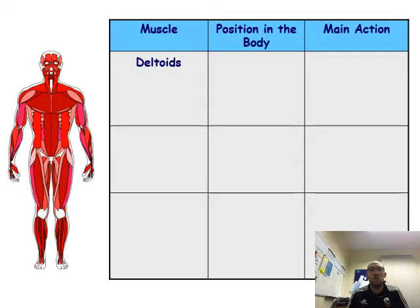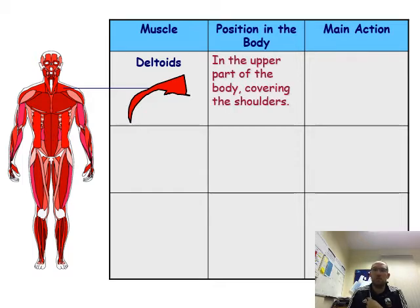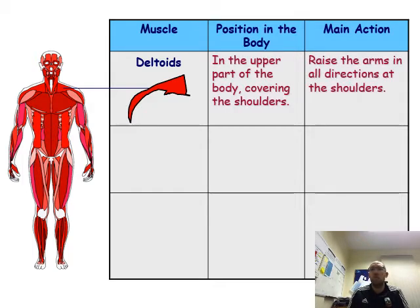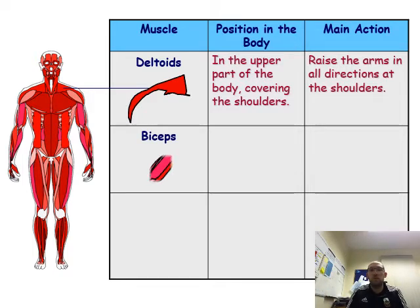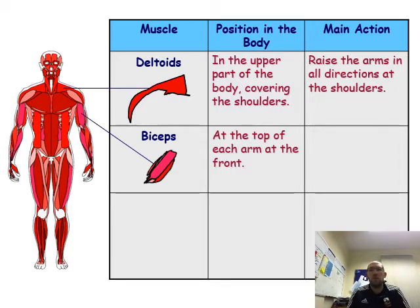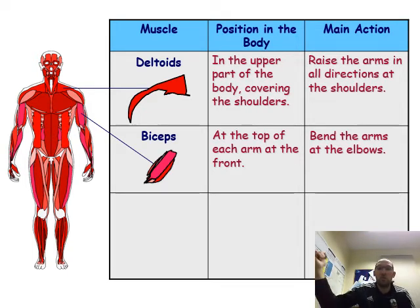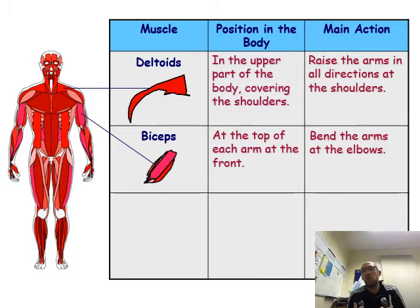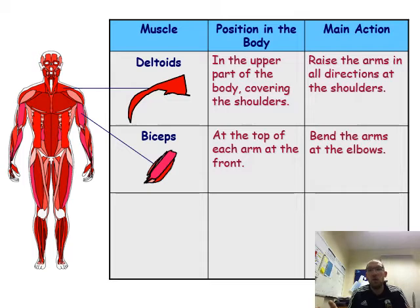Looking at the front of the body — the deltoids are in the shoulder and they do the work when you raise your arm up. The biceps are in the upper arm and they are responsible for bending your arm, drawing it back in toward you. I've given extra attention to the biceps, triceps, hamstrings, and quadriceps because they come up most in exams.